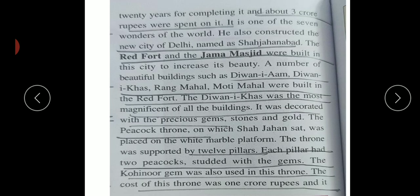Shah Jahan spent 20 years and about three crore rupees completing the Taj Mahal. It was considered the seventh wonder of the world. He also constructed the new city of Delhi - Shah Jahanabad - along with the Red Fort and the Jama Masjid. All these buildings were built to increase their beauty.